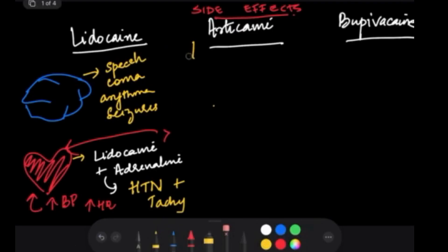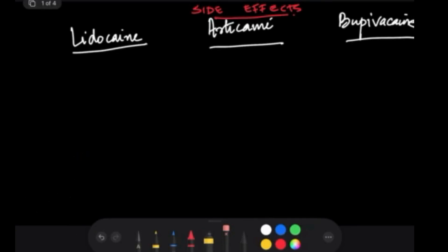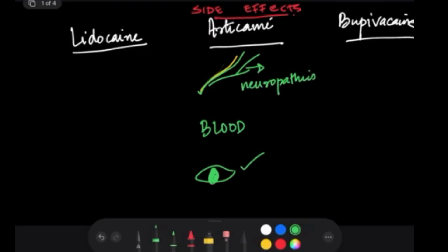Now articaine shows similar side effects as lidocaine, but it has some unique side effects. I'm going to draw a nerve, blood, and eyes. It causes ocular changes. When it comes to the nerve, you'll see neuropathies and paresthesia to the lingual nerve. In the blood, it causes methemoglobinemia. Now this is also caused by another drug, prilocaine.